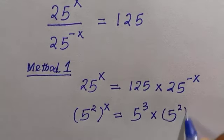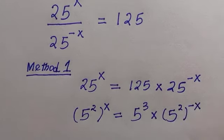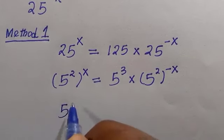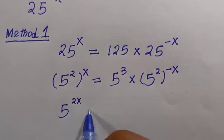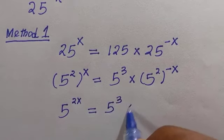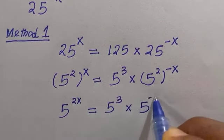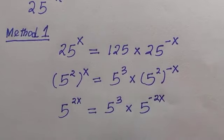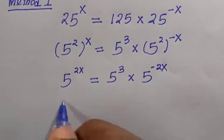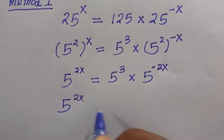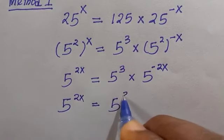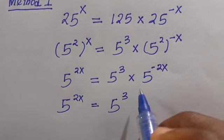According to the rules of exponents, we multiply the exponents. So we get 5 raised to power 2x equals 5 raised to power 3 multiplied by 5 raised to power minus 2x. Applying the law of exponents, we can change multiplication of same-base terms to addition of exponents.